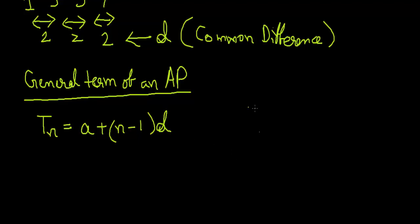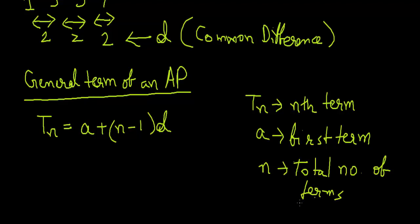Let me define it. T_N is the Nth term, a is our first term or beginning series term, n is the total number of terms, and d right here is the common difference we already saw. This was the formula for general term of an AP.